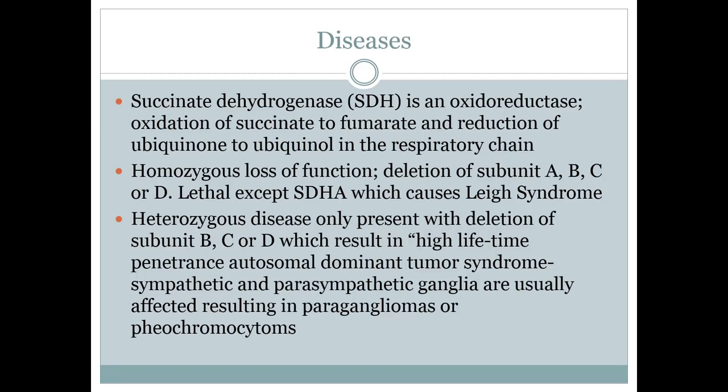Let's talk about heterozygous mutations. That means only one set of alleles has the mutation, and that will often result in a high-lifetime penetrance autosomal dominant tumor syndrome. Both the sympathetic and parasympathetic ganglia are usually affected, resulting in malignant tumors.